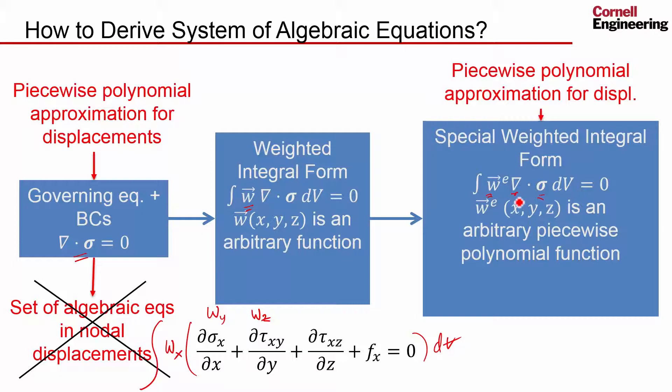When you have the special weighted integral form and then you convert it to the weak form by integration by parts, then you plug in your piecewise polynomial approximation and out pop the set of algebraic equations in the nodal displacements.